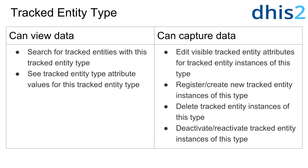We can also discuss the can capture data setting as it applies to tracked entity types. In addition to the permissions allowed by the can view data setting, this allows users to edit visible tracked entity attributes for tracked entity instances of the same type, register or create new tracked entity instances of the type that has been shared, delete tracked entity instances of the type that has been shared, and deactivate or reactivate those tracked entity instances. The can capture data setting allows more permissions to actively edit the attribute data associated with a tracked entity, as well as create new tracked entities in the system.